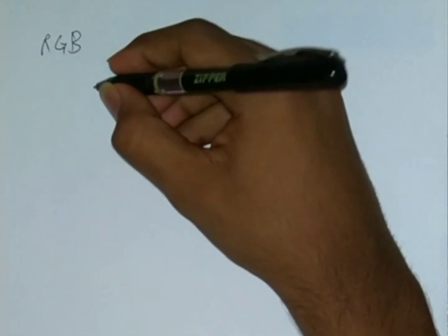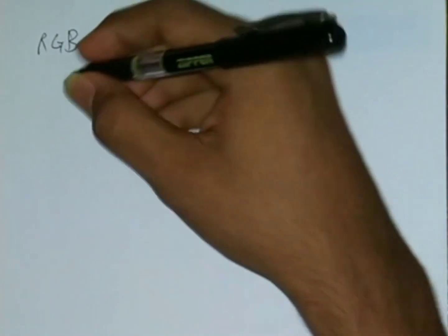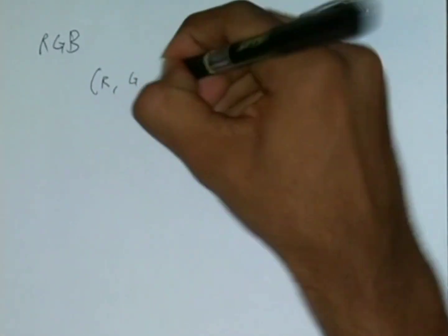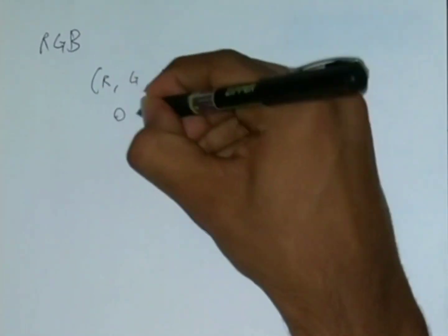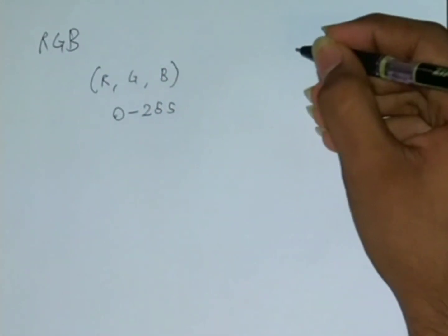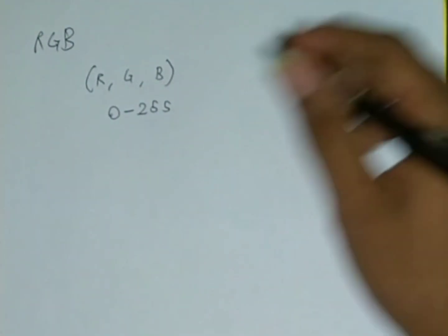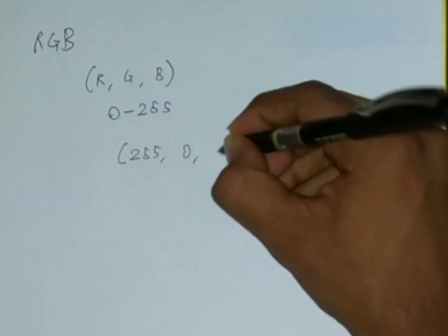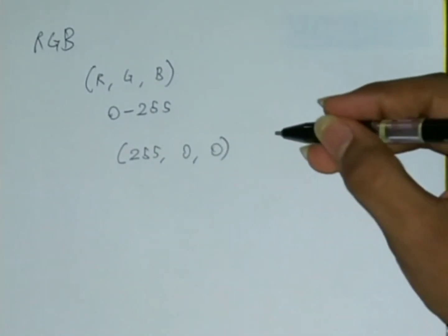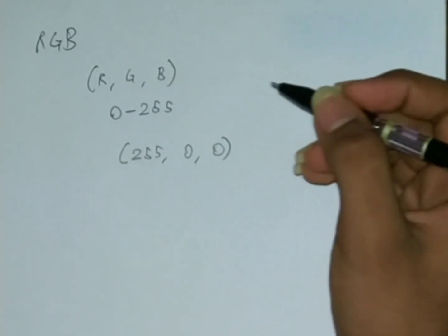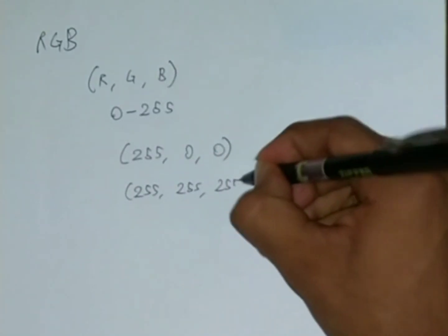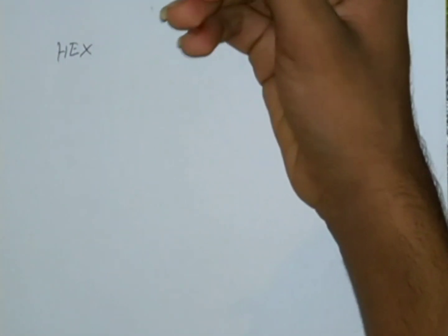Now the RGB color system. RGB is written like all the values are separated decimals — R, G, B. All of these values range from 0 to 255, which tells the intensity of the red, green, or blue. So maybe you will see like 255, 0, 0, which means it's extreme red. And if it's 255, 255, 255, it means white.